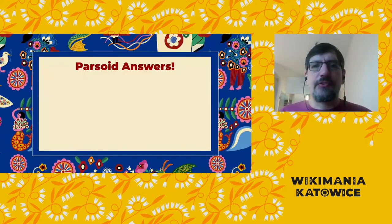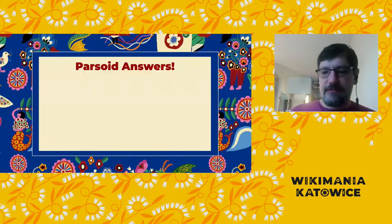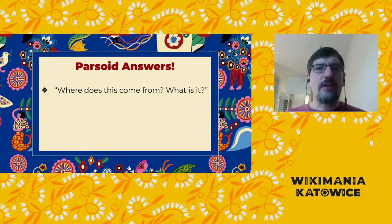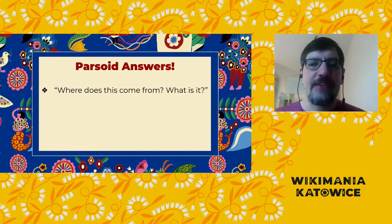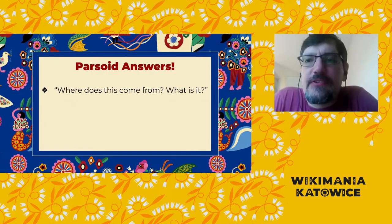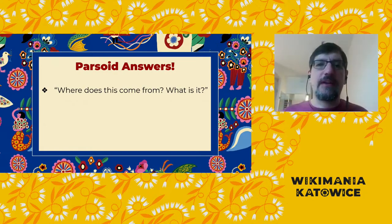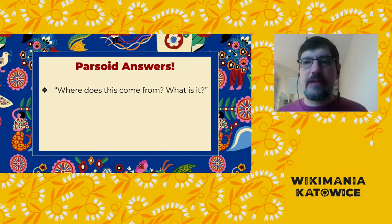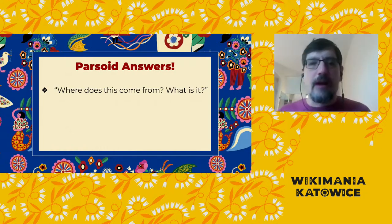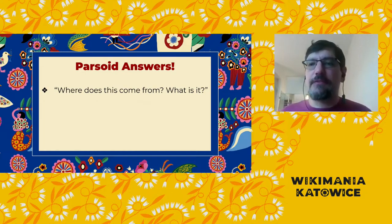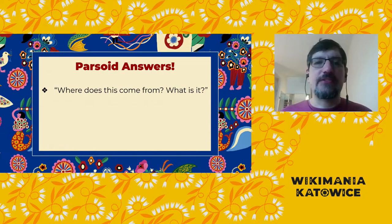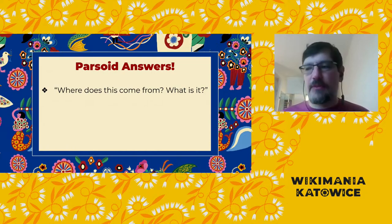These are the sorts of questions that Parsoid allows us to answer. Where is this coming from? It allows us to match up the HTML in your browser and the original Wikitext, so that if you were to point at an item on your browser page, we can tell exactly where in the Wikitext that thing came from. What is it? By preserving information about template boundaries, arguments, and other invisible features of the Wikitext, Parsoid can also provide additional meaning for the things you see. For example, this bit of HTML is an infobox.